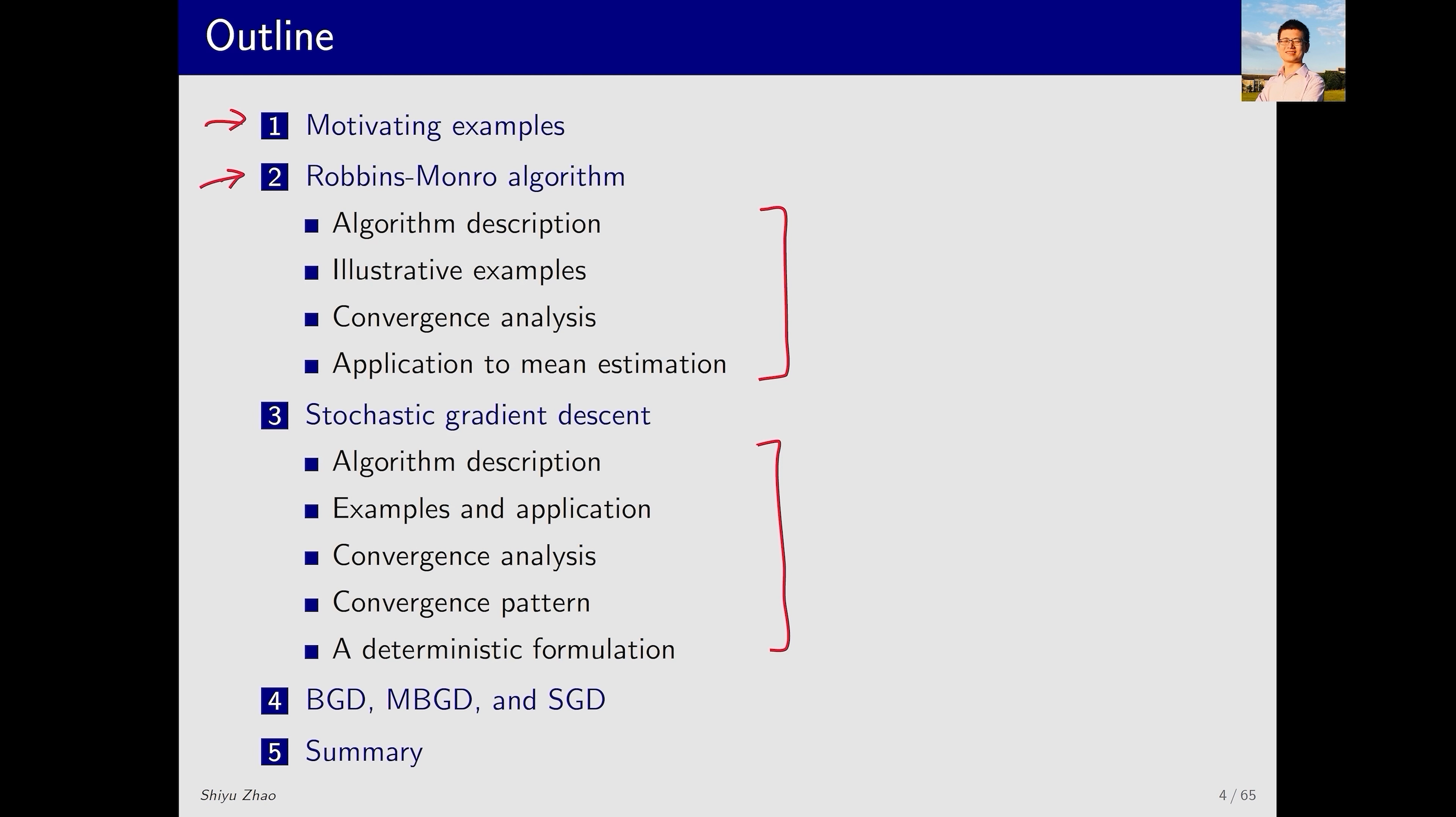In the second part, I will introduce the Robbins-Monro algorithm, abbreviated as RM algorithm. It is a classic algorithm in the field of stochastic approximation. After learning it, you will find it elegant and powerful, capable of solving many problems.